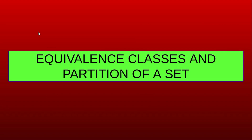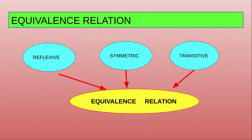This tutorial is about equivalence classes and partition of a set. To define equivalence classes, we need an equivalence relation. A relation on a non-empty set A is said to be an equivalence relation if it is reflexive, symmetric, and transitive. A relation R is reflexive if ordered pair (a,a) belongs to R for all a in A; symmetric if (a,b) in R implies (b,a) in R; and transitive if (a,b) and (b,c) in R implies (a,c) in R.